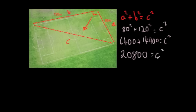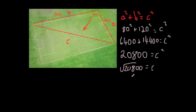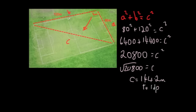To get rid of the squared, we square root both sides. The square root of 20,800 equals C, which gives C equal to 144.2 metres to one decimal place. So we've used Pythagoras' theorem to work out the length of the diagonal of this football pitch.